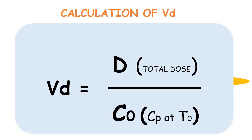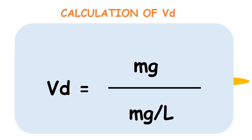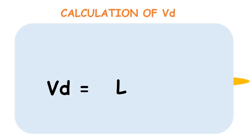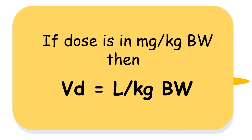Now the total dose was in milligrams and the plasma concentration was in milligrams per liter, so the volume of distribution will be expressed in liters. Also consider: if the total dose was given in terms of milligram per kg body weight, then the volume of distribution will be expressed as liter per kg body weight.